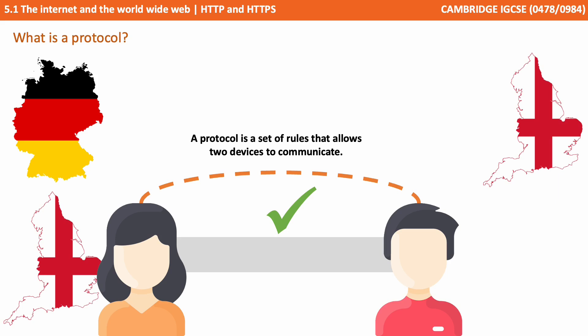Now we see that the person on the left, as well as understanding German, also understands English. The person on the left has two protocols installed, the person on the right has one. They both share one common protocol, and so they are now able to communicate.